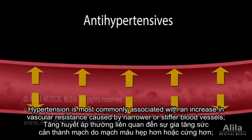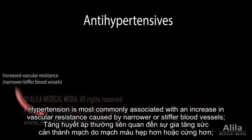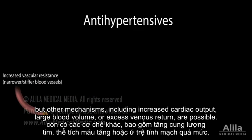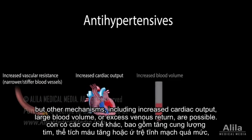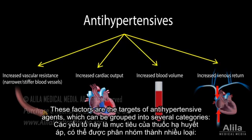Hypertension is most commonly associated with an increase in vascular resistance caused by narrower or stiffer blood vessels. But other mechanisms, including increased cardiac output, large blood volume, or excess venous return, are possible. These factors are the targets of antihypertensive agents, which can be grouped into several categories.